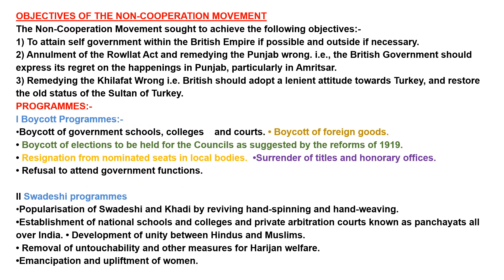The objectives of the non-cooperation movement were: number one, to attain self-government within the British Empire if possible and outside if necessary; number two, annulment of the Rowlatt Act and redressing the Punjab wrongs — meaning the British government should express regret for the happenings in Punjab, particularly at Jallianwala Bagh; and number three, redressing the Khilafat wrong — meaning the British should adopt a lenient attitude towards Turkey and restore the old status of the Sultan of Turkey.